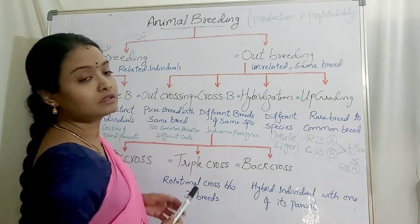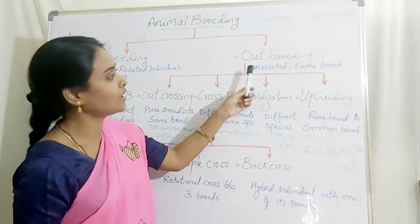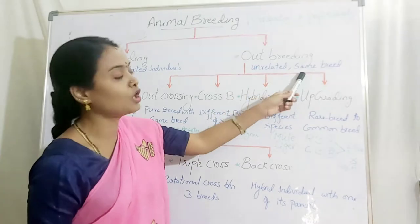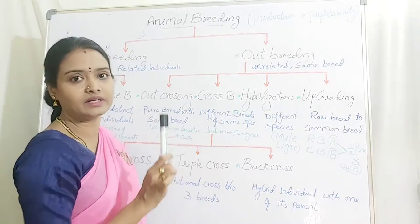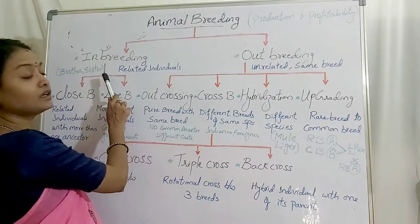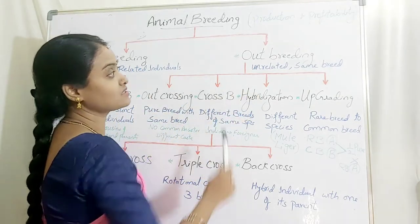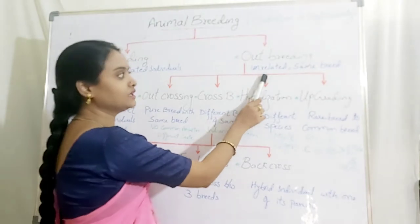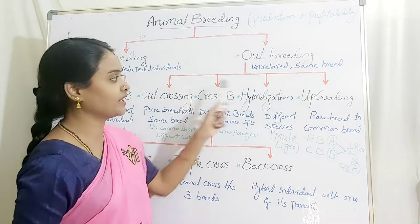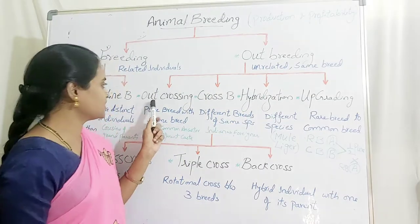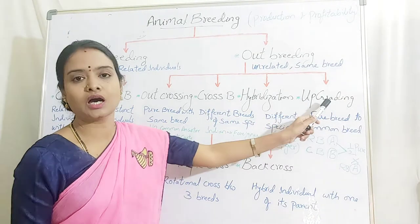Outbreeding is crossing or mating between unrelated animals belonging to the same breed. They belong to the same breed but are unrelated — their ancestors are not the same. Outbreeding is classified into four types: outcrossing, crossbreeding, hybridization, and upgrading.